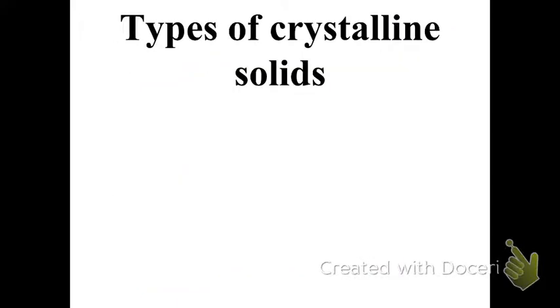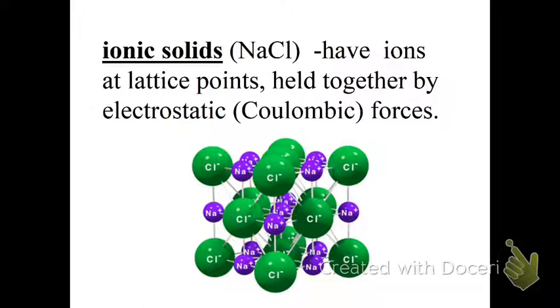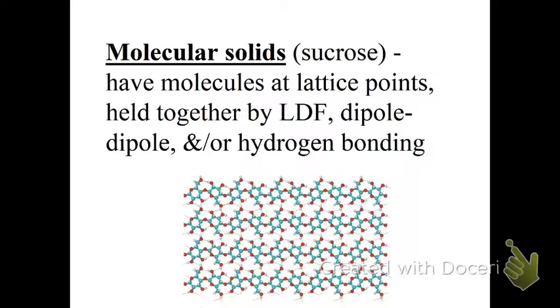The types of crystalline solids: we have ionic solids such as sodium chloride, magnesium chloride, magnesium oxide. They're held together by those Coulombic forces. We have molecular solids such as sucrose, and they have molecules at lattice points, and they're held together by London dispersion forces, dipole-dipole, and/or hydrogen bonding if that is present.